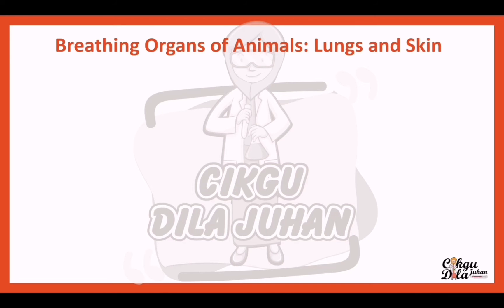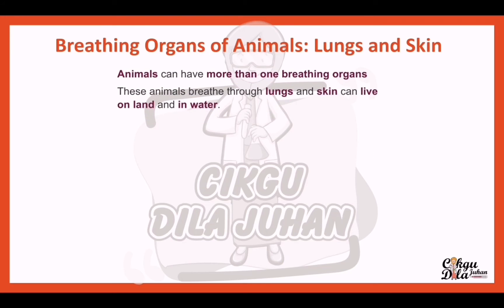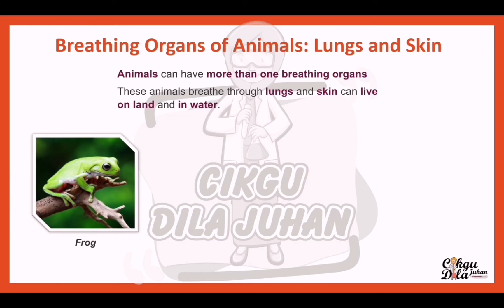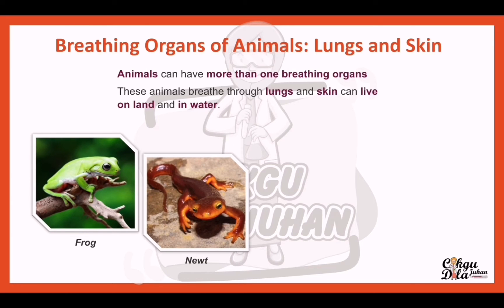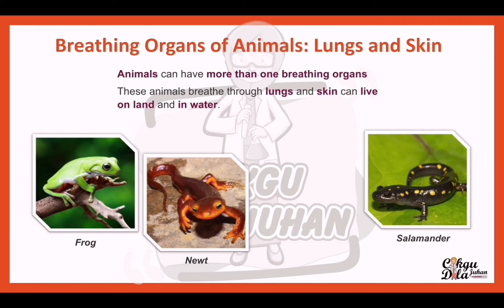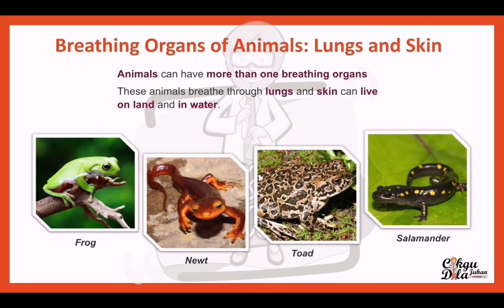Some animals have more than one breathing organ — lungs and skin. These animals breathe through both lungs and skin and can live on land and in water, such as frog, salamander, and toad.